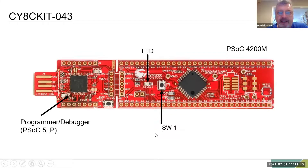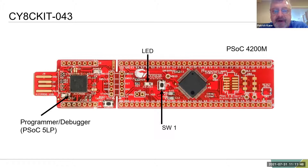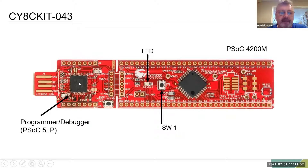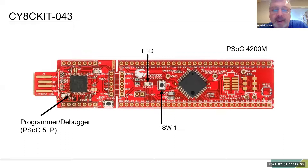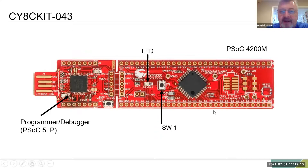There's a switch — basically a reset switch that cuts the power — and there's an LED, which is what we're going to use. This is actually a PSOC-5 LP, but we use them as programmer/debuggers on our kits. It's a much easier solution, and since we make both chips, it's less expensive for us and therefore the kits are less expensive for you. Of course, they're free to you today.